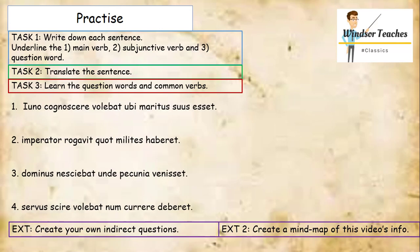So the sentences are: Iuno cognoscere volebat ubi maritus suus esset. Two, imperator rogavit quot milites haberet. Three, dominus nesciebat unde pecunia venisset. And four, servus scire volebat num currere deberet.